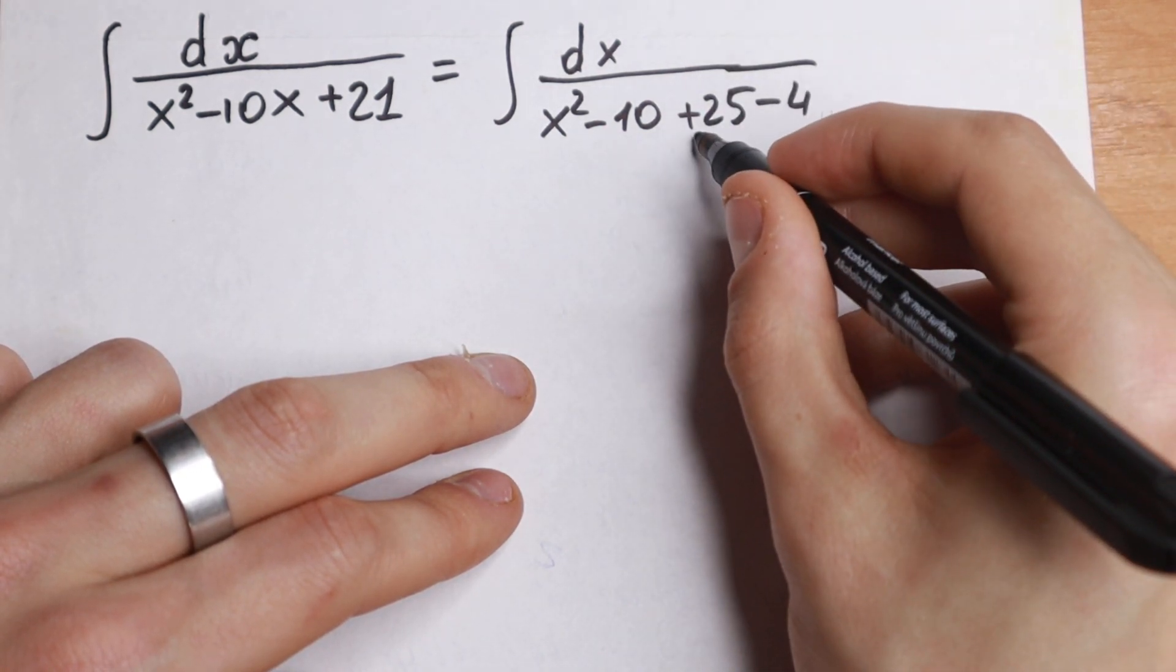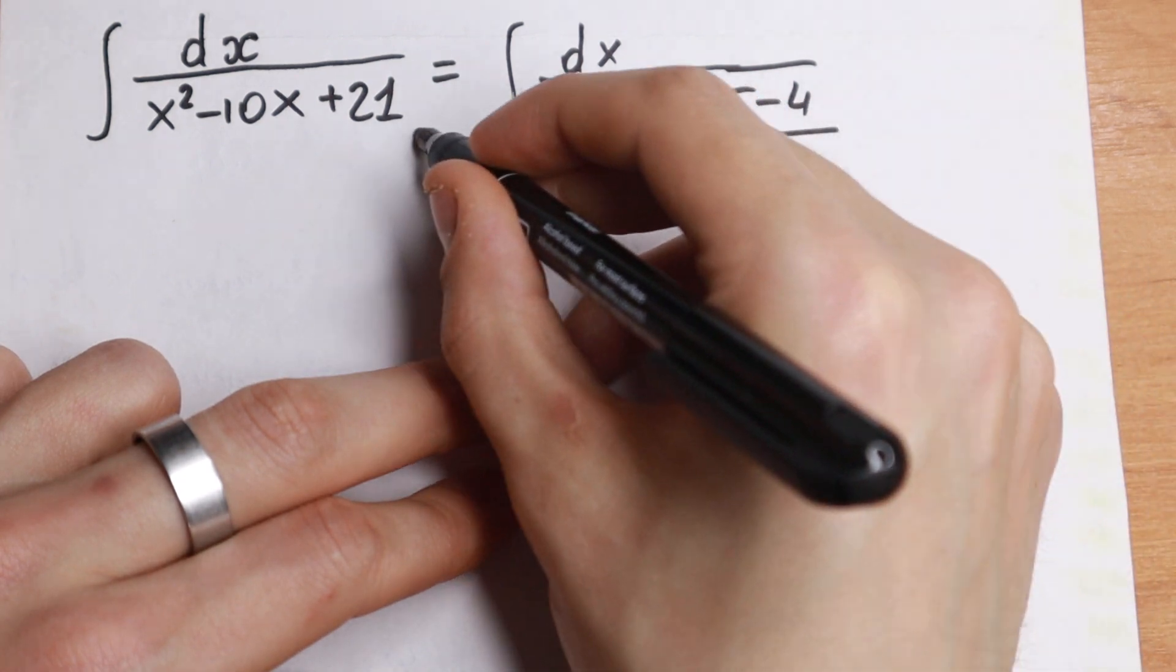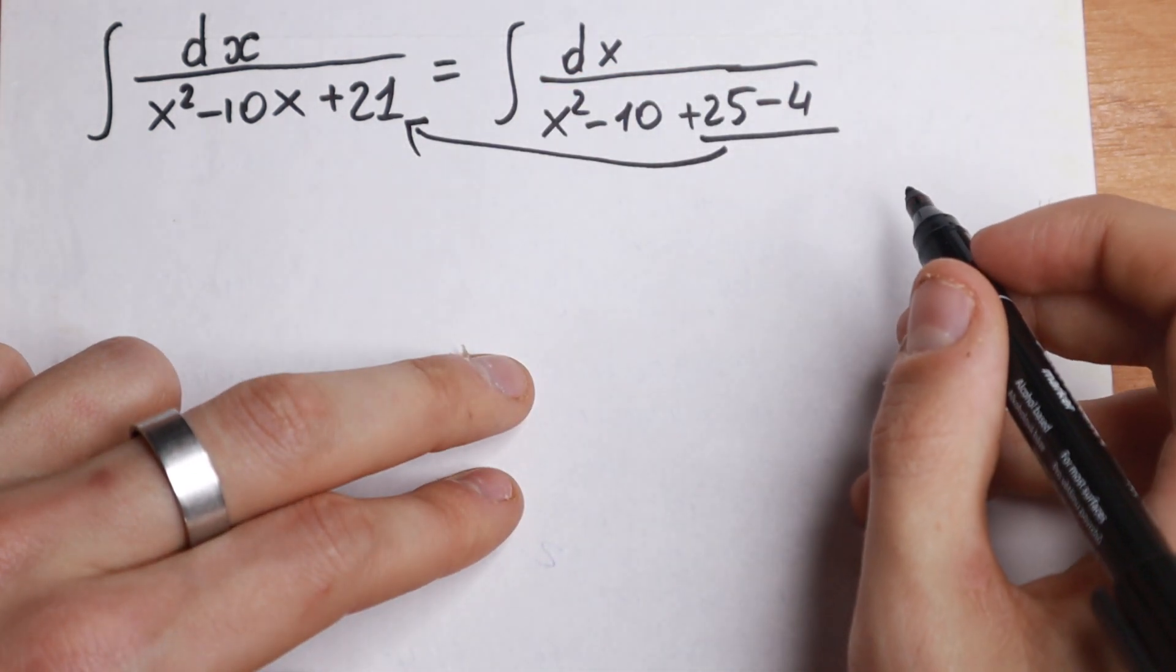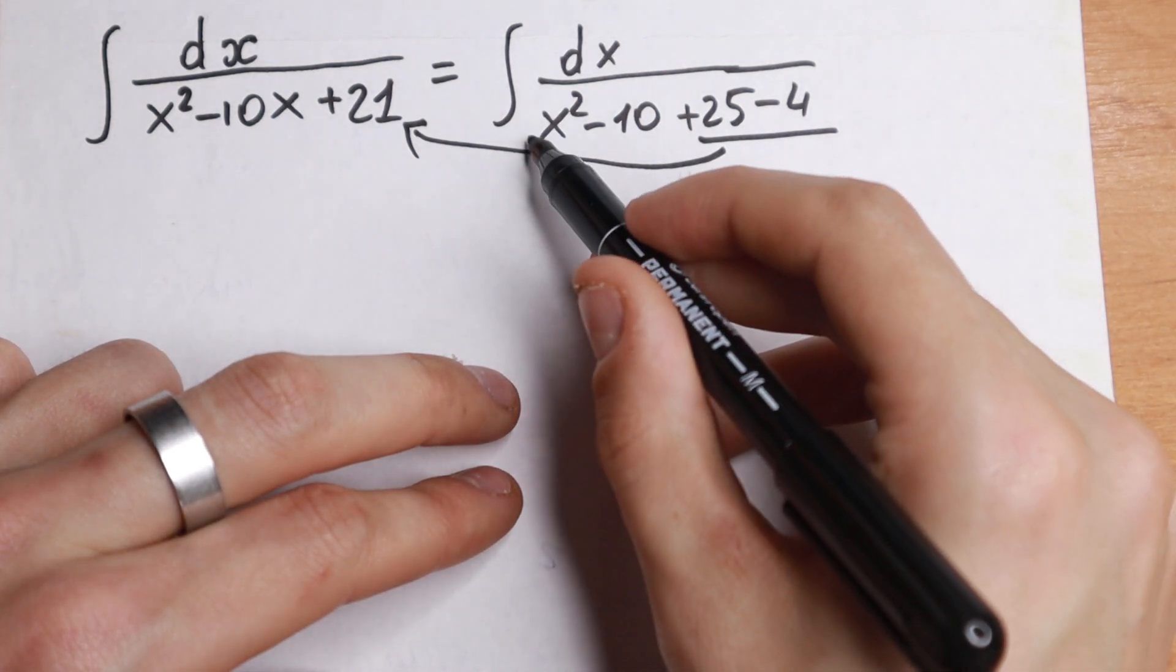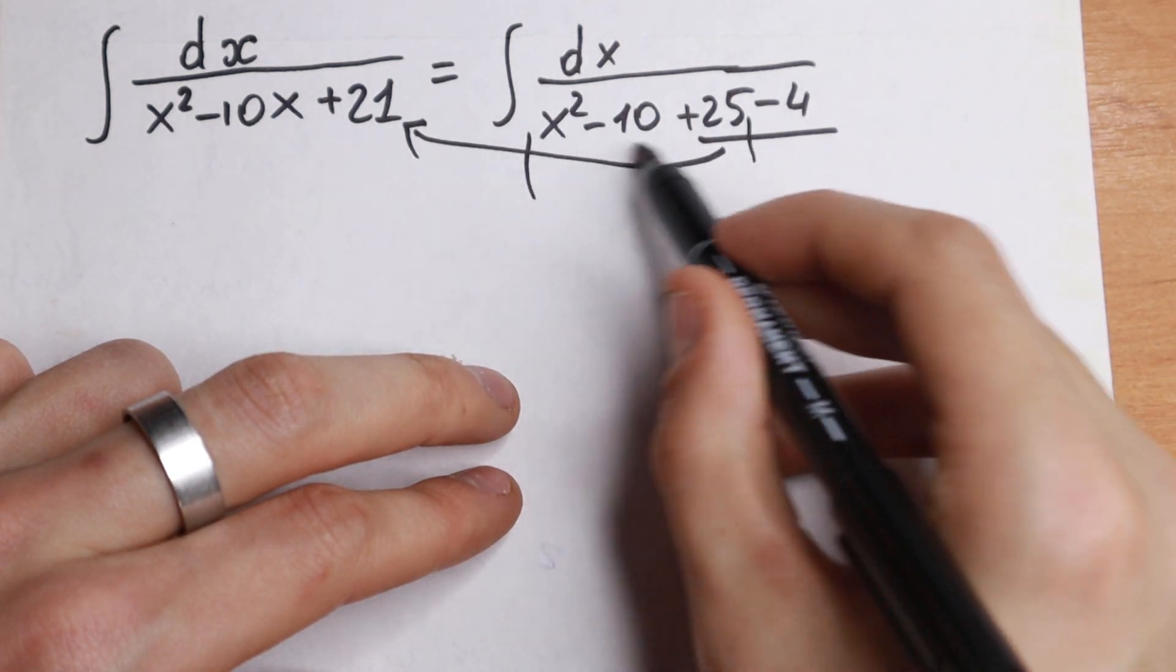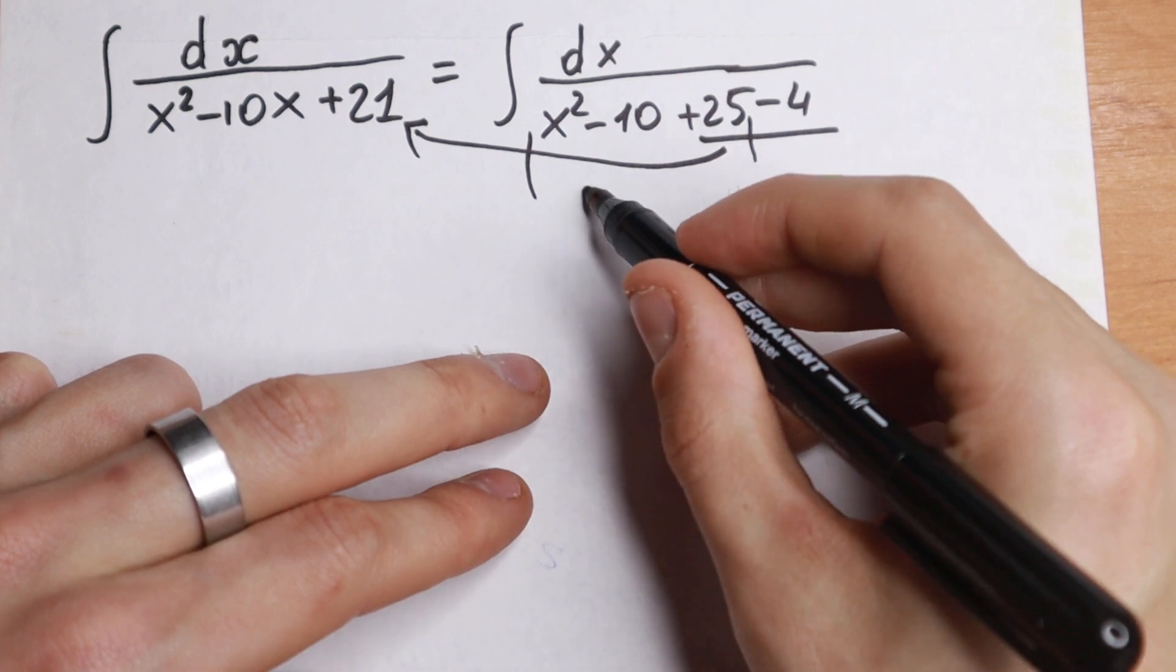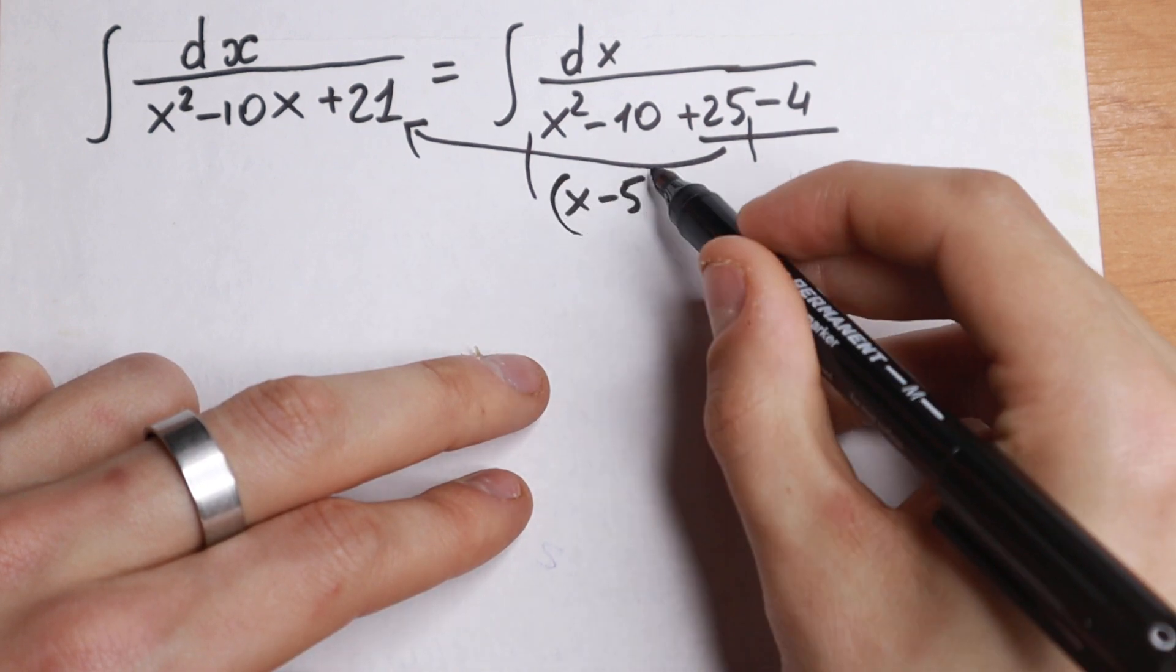So I write this, let's take a look. This element I write as 25 minus 4. But why I write this like that? Because take a look, these elements, if we group this, we have our formula. This is our x minus 5 square.